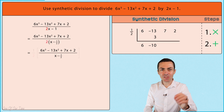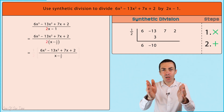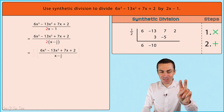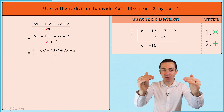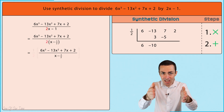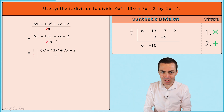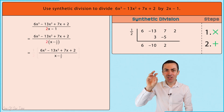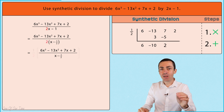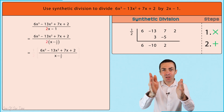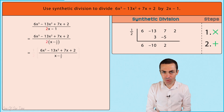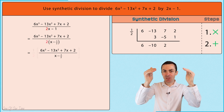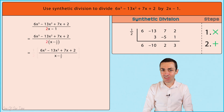Back to step one — multiply: we take the one-half and multiply by negative 10 to give us negative 5, which we write one column to the right below the 7. Step two — add: we take 7 and add negative 5 to give us positive 2. Step one again — multiply: one-half times 2 gives us 1. Step two — add: we take 2 and add 1 to give us 3. We have now finished the synthetic division process.